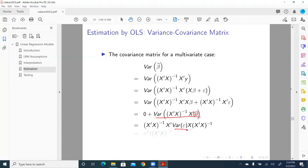And the variance of epsilon is a constant term, so we can pull it to the very front. And the final result is sigma square multiplied by identity matrix. Then X prime X inverse.